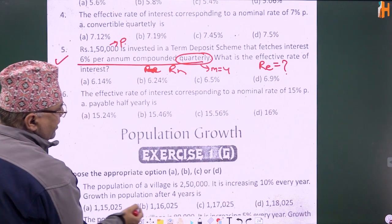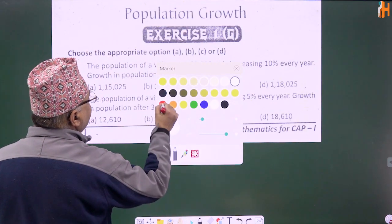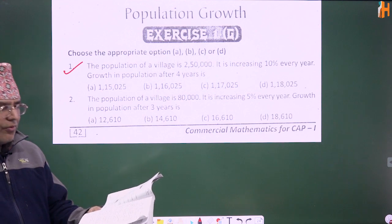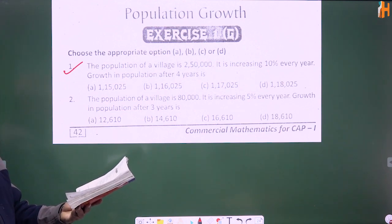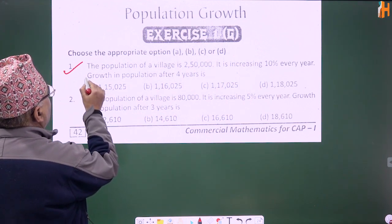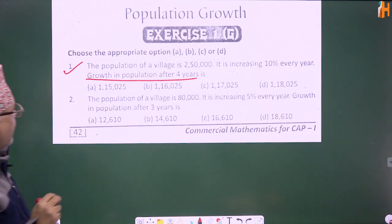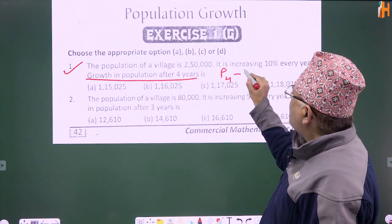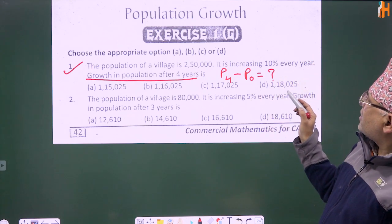Question number one: The population of a village is 2,50,000. It is increasing at 10% every year. Find the growth in population after 4 years.